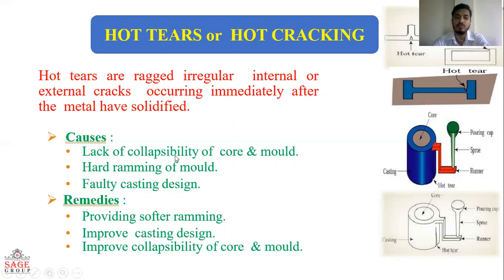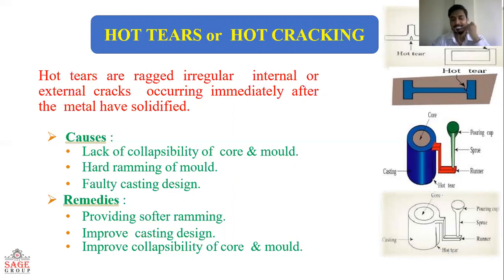Causes of hot tear: lack of collapsibility of the mold, hard ramming of mold, and poor casting design. Remedies: provide softer ramming, improve casting design, and improve collapsibility of the mold.